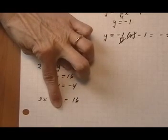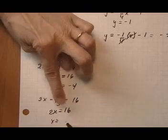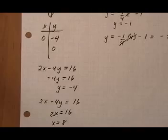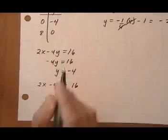And I'm left with 2x equals 16. Dividing both sides by 2, I get x equals 8. So when y is 0, x is 8.